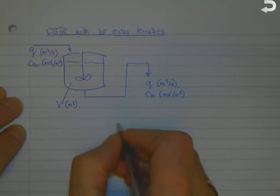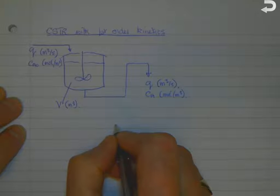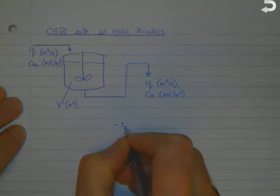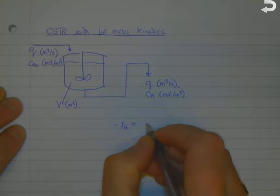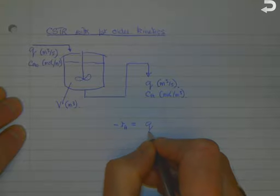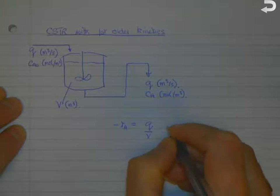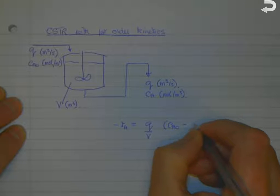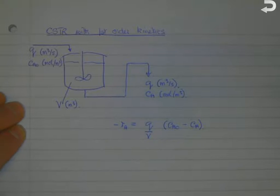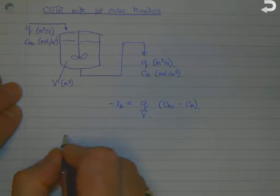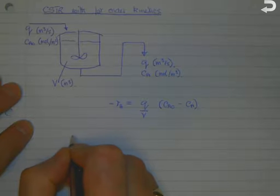The equation derived to describe this system is -rA = Q/V(CAo - CA), where rA is the reaction rate of our starting material A.